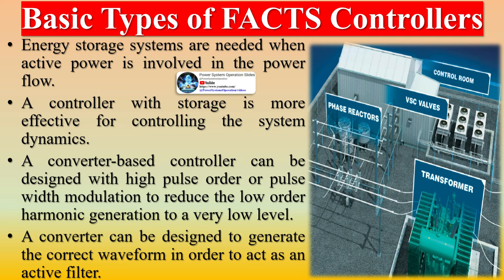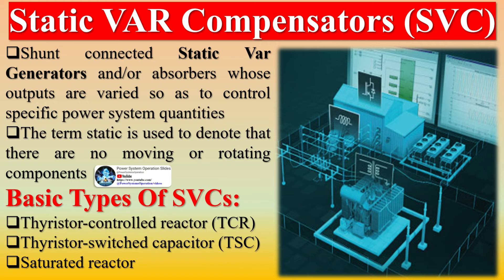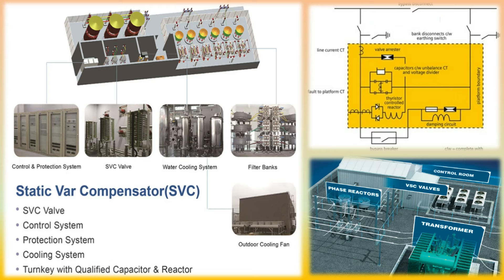Static VAR Compensators (SVC) are shunt-connected static VAR generators and/or absorbers whose outputs are varied so as to control specific power system quantities. The term 'static' is used to denote that there are no moving or rotating components. Basic types of SVCs include: thyristor-controlled reactor (TCR), thyristor-switched capacitor (TSC), and saturated reactor. A Static VAR System (SVS) is an aggregation of SVCs and mechanically switched capacitors or reactors whose outputs are coordinated. When operating at its capacitive limit, an SVC behaves like a simple capacitor.